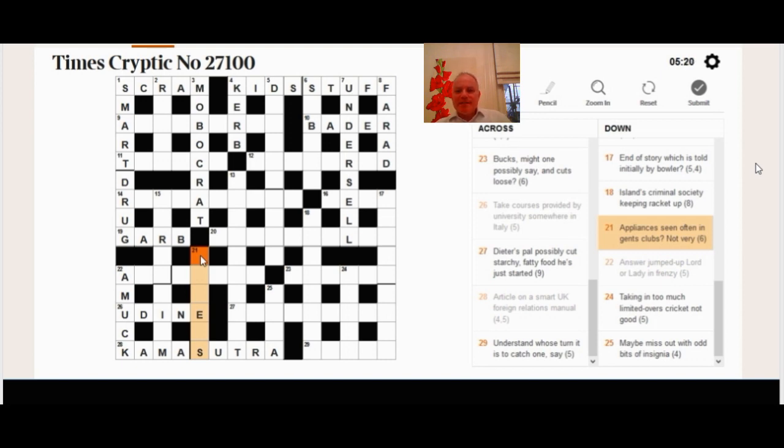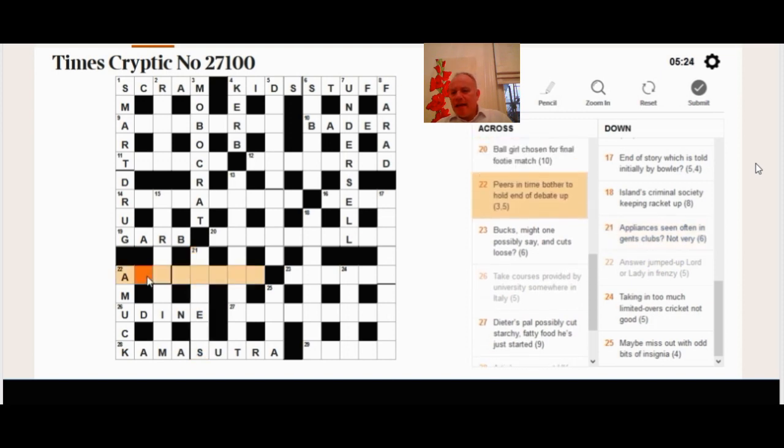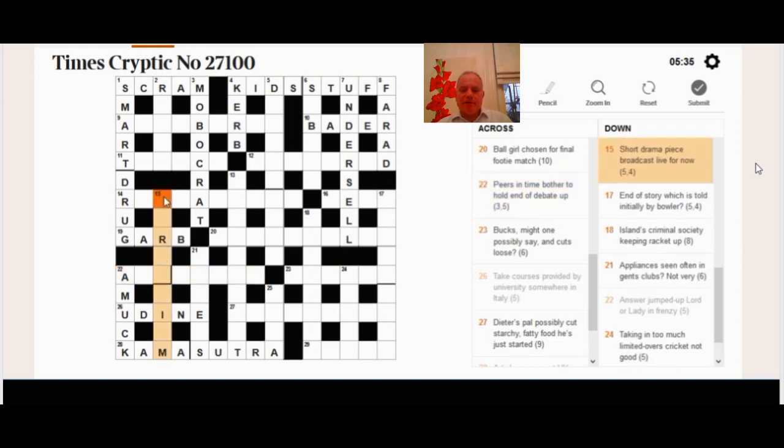21 down. Appliance is seen often in gents clubs. Not very. And there, the definition is actually appliance seen often in gyms. And that's kind of cunningly why there's no apostrophe. Because it's only the first five words that are the definition. So you actually need an appliance that you find in toilets.